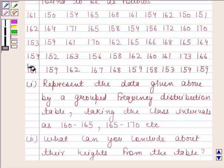First part is, represent the data given above by a grouped frequency distribution table taking the class intervals as 160 to 165, 165 to 170, etc.